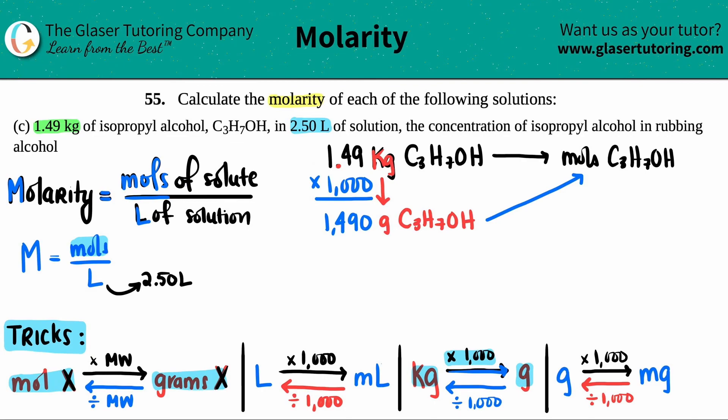Now we're doing this little trick over here. I'm starting with grams, I gotta get to moles. All I have to do, and I label it as X - X means it could be any element or compound. I have grams of isopropyl alcohol and grams of isopropyl alcohol.